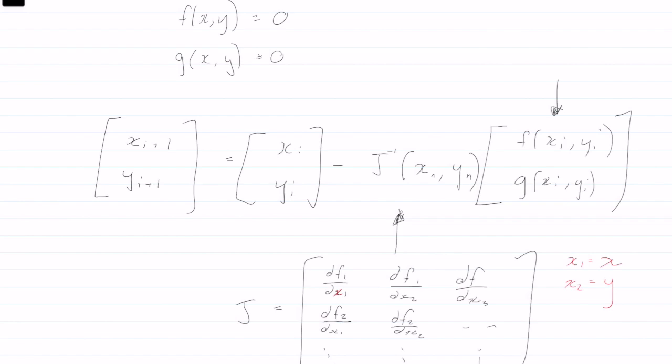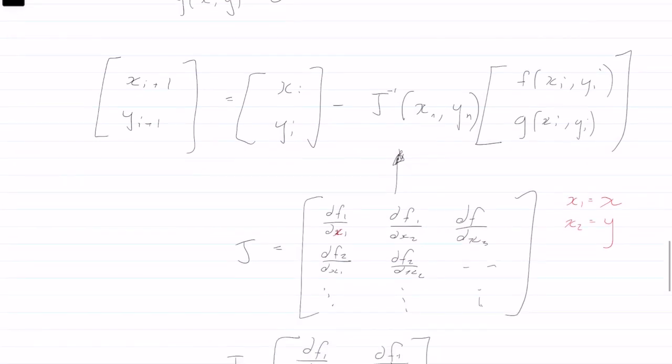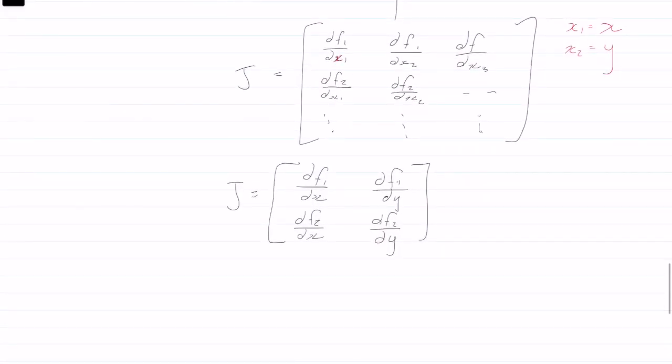and then the last thing we have is the actual function, the value of the actual function at the initial positions of x_i and y_i. So let us get straight into an example to show you how to use this method.